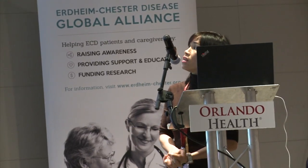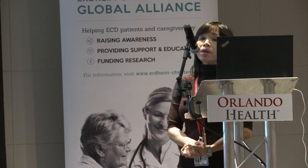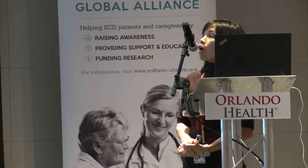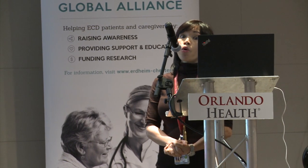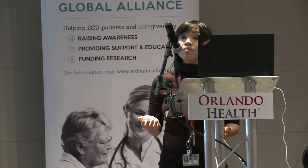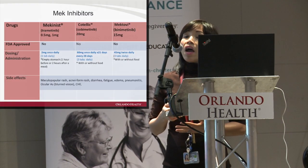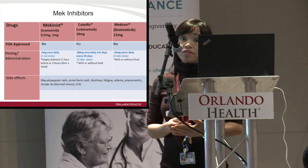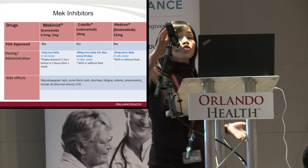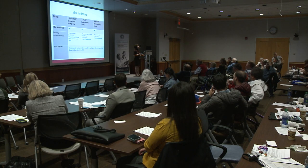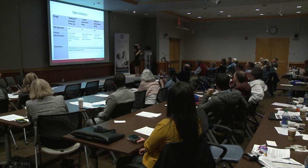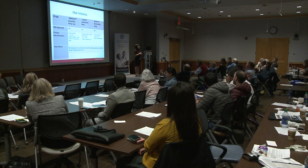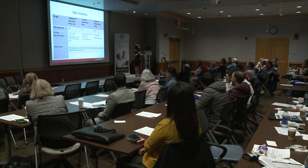The MEK inhibitor Mekinist and Mektovi are dosed every day, whereas Cotellic is three weeks on and one week off. An important caveat is that the MEK inhibitor must be stored in the refrigerator. For travel, if you have an unopened bottle, it can sit at room temperature and will be good for 30 days. Otherwise, the recommendation is to use a thermal cup — place it in the freezer hours before travel, then put your medication in right before you leave, giving you about six to eight hours of temperature stability.